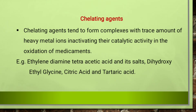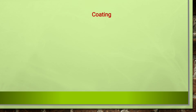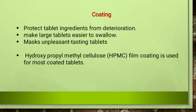The next category is chelating agents. Chelating agents tend to form complexes with trace amounts of heavy metals like iron, inactivating their catalytic activity in the oxidation of medicaments. Ethylenediaminetetraacetic acid (EDTA) and its salts, dihydroxyethyl glycine, citric acid, and tartaric acid are the most commonly used chelating agents.